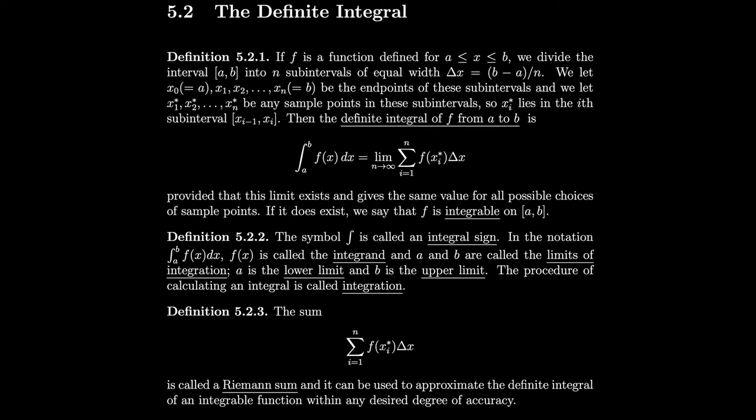Section 5.2, the definite integral. If f is a function defined for x between a and b, we divide the interval a, b into n subintervals of equal width delta x, where delta x is equal to b minus a over n.